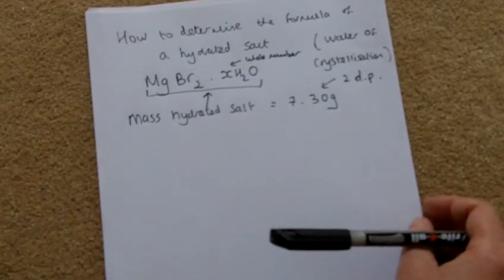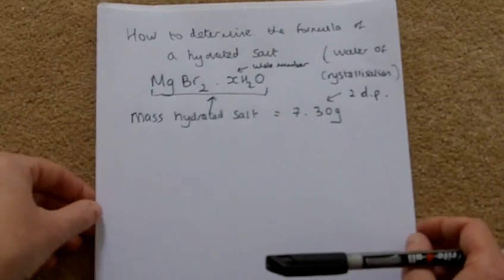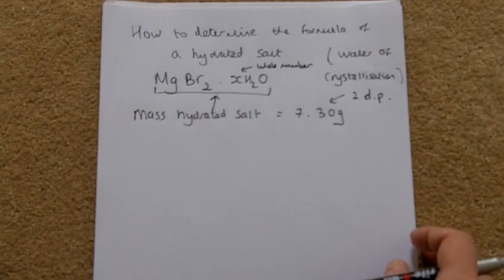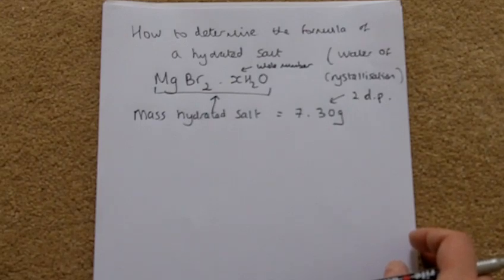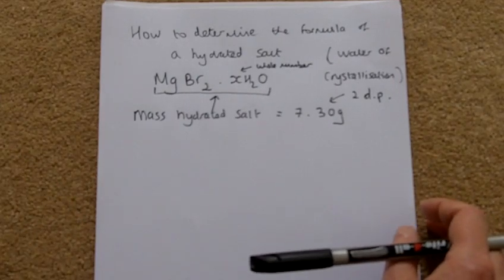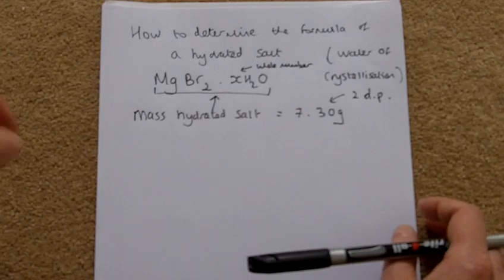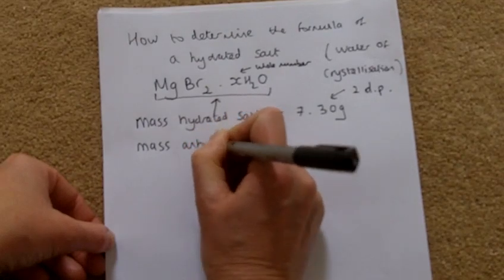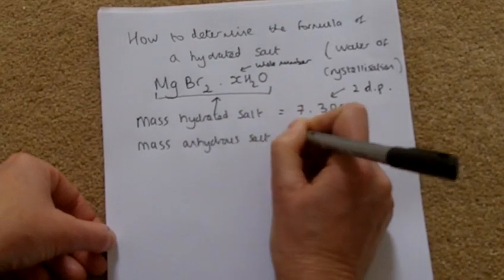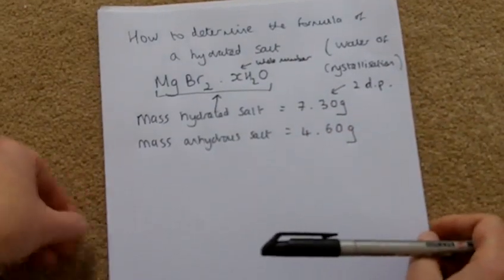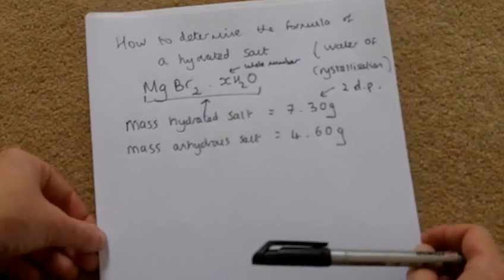Then we put it in a small crucible and heat it up. You don't heat it too strongly because you don't want to decompose it — you heat it just enough to remove the water from the crystals. Then you let it cool and weigh it again. What you're left with is the anhydrous salt — no water, because you've removed all the water. The mass might come out as 4.60 grams.